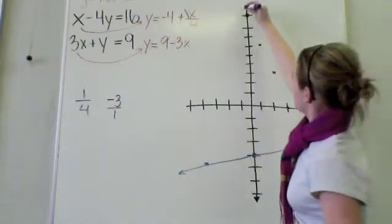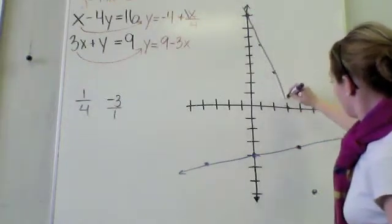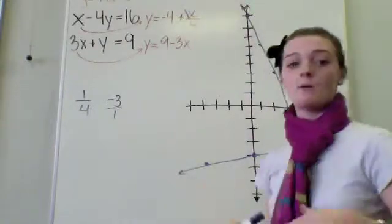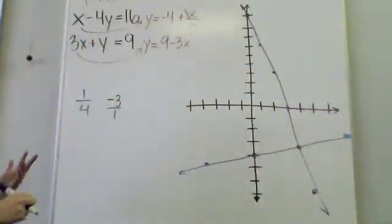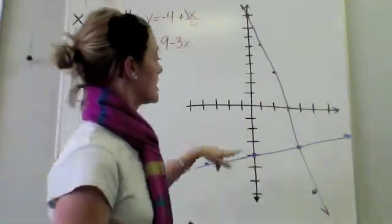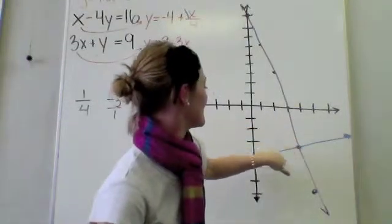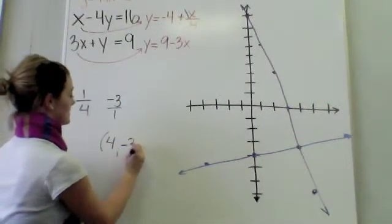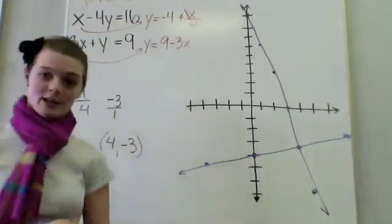So, I can now connect my dots. Side, this is crooked. But we essentially just solved our system of equations, because our intersection point will be our solution. And just by looking at our graph, our solution is at 4, negative 3. So, 4, negative 3, our point of intersection. Thank you so much.